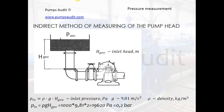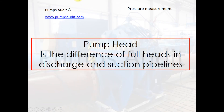Very often pressure gauges are absent and there is no direct opportunity to measure pressure. But sometimes you can use indirect methods for evaluation of pressure. For example, if the pump takes liquid from a tank, the level of the liquid in the tank can be converted to pressure using a formula. It is important to remember that pump head is the difference of full heads in the discharge and suction pipelines. Very often pump users forget this and do not install a pressure gauge in the suction pipeline, which can lead to incorrect pump head evaluation.